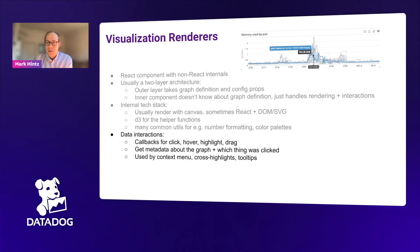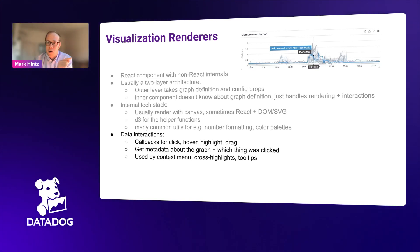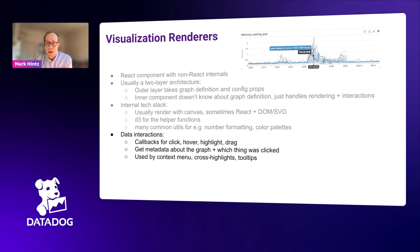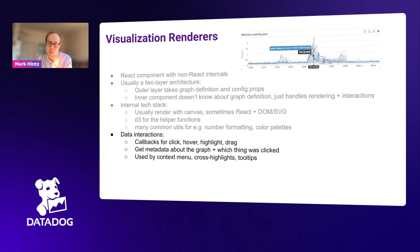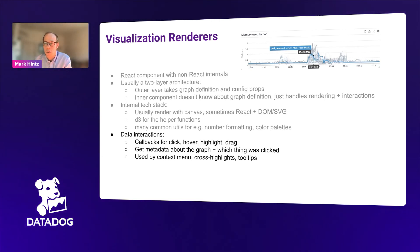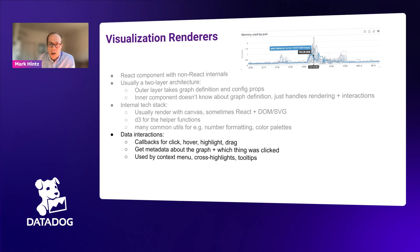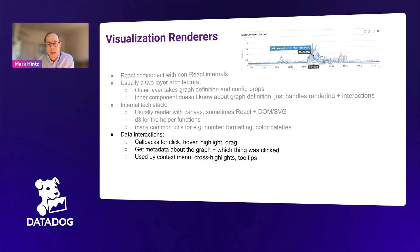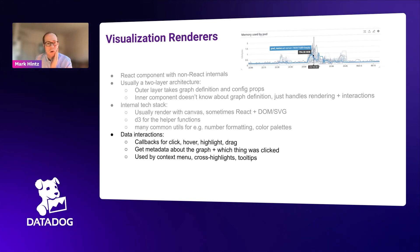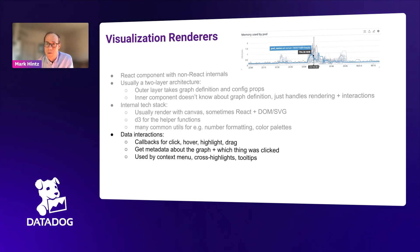Talking about data interactions: when implementing hover and contextual highlights on data points and context menus — where you click a data point and get metadata used to create links to other parts of the product — each visualization renderer implements callbacks for events like click, hover, highlight, or drag. Those callbacks get a standardized metadata payload that tells us about the visualization and what thing in the viz you clicked on. These are used for cross-highlight and contextual interactions across different visualizations.